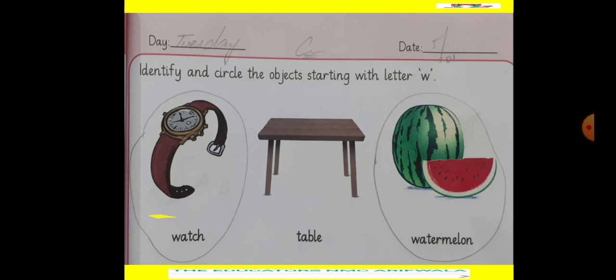First object is watch. Watch. I have to circle the watch because it starts with Letter W.